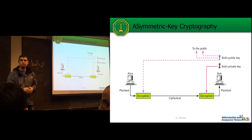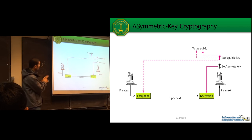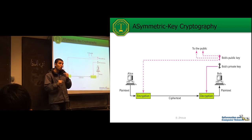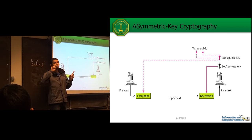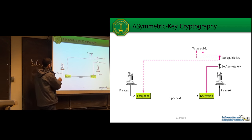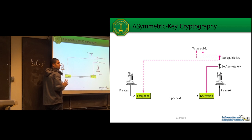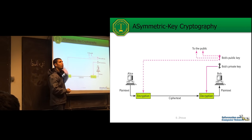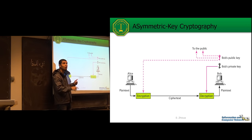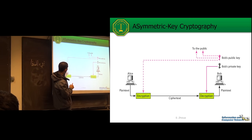The key point with asymmetric key cryptography is that when you encrypt data with one key, you decrypt it with the other key. So one key is used for encryption and one for decryption. When Alice encrypts data with Bob's public key, it can only be decrypted with Bob's corresponding private key — encryption with the public key, decryption with the private key.